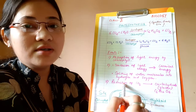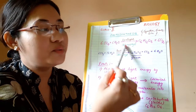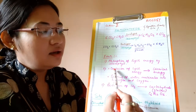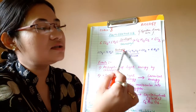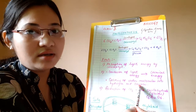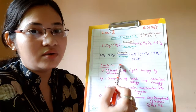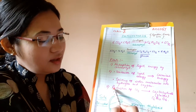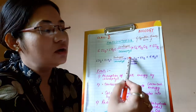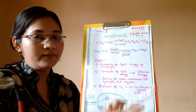Let us quickly memorize these events of photosynthesis. First: absorption of light energy by chlorophyll — the chlorophyll molecule traps sunlight. Second: conversion of light energy into chemical energy — sunlight is converted into glucose. Third: splitting of water molecules into hydrogen and oxygen — when chlorophyll molecules absorb sunlight, they pass the energy to water, and water splits into H+ and OH-. Fourth: reduction of carbon dioxide into carbohydrate, that is glucose. These are the three important events or steps of photosynthesis.